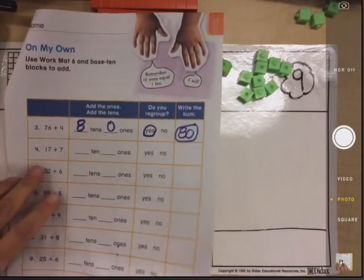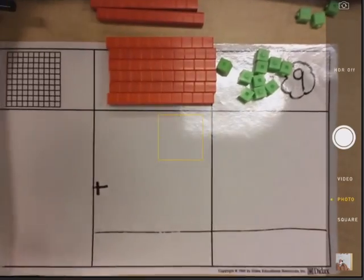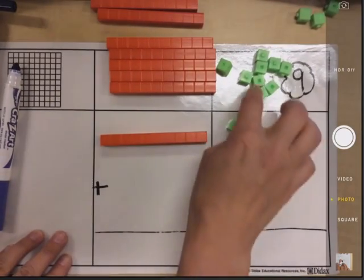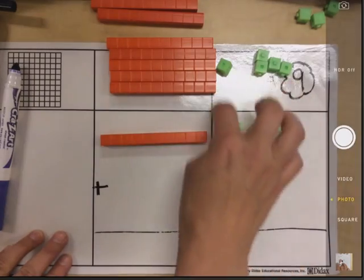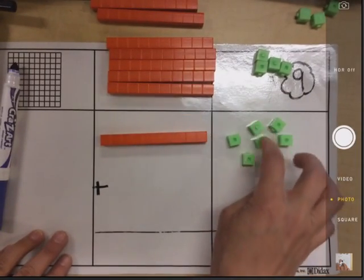And we're going to work on number four, which is 17 plus 7. So partner number one, on your work mat, show me 17 with your base tens. We're using base tens to help us do these math problems.